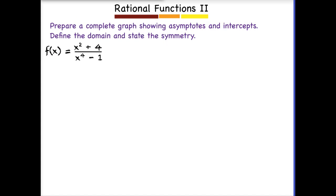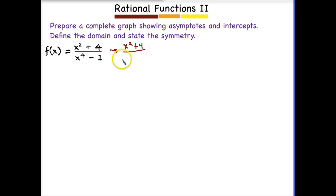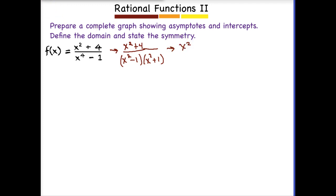I'm going to spend the rest of the time going over a couple of graphing problems following each of the steps. Step one is to factor. My numerator does not factor, so we leave it the same. The denominator initially factors as a difference of squares into X squared minus 1 and X squared plus 1. And hopefully you can see the denominator can continue to factor — X squared minus 1 is also a difference of squares.